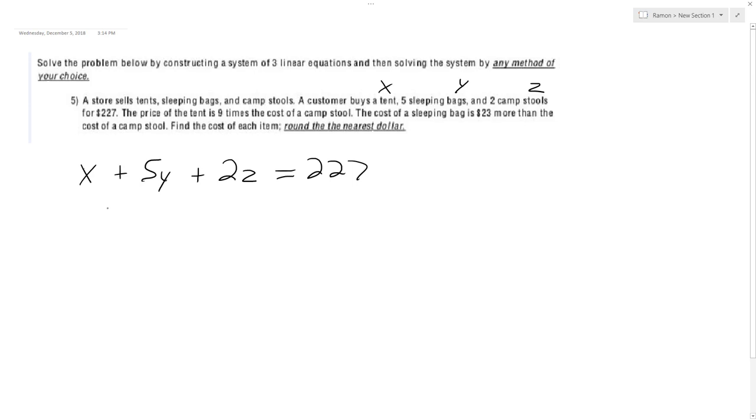So the price of a tent is nine times the cost of a camp stool, so that means x is equal to 9z.